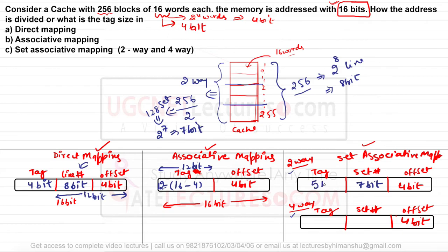For four-way set associative mapping, we divide 256 lines by 4, giving 64 sets. To represent 64 sets, we need 6 bits. With 4 bits for offset and 6 bits for set number totalling 10 bits, the remaining tag bits are also 6 bits.